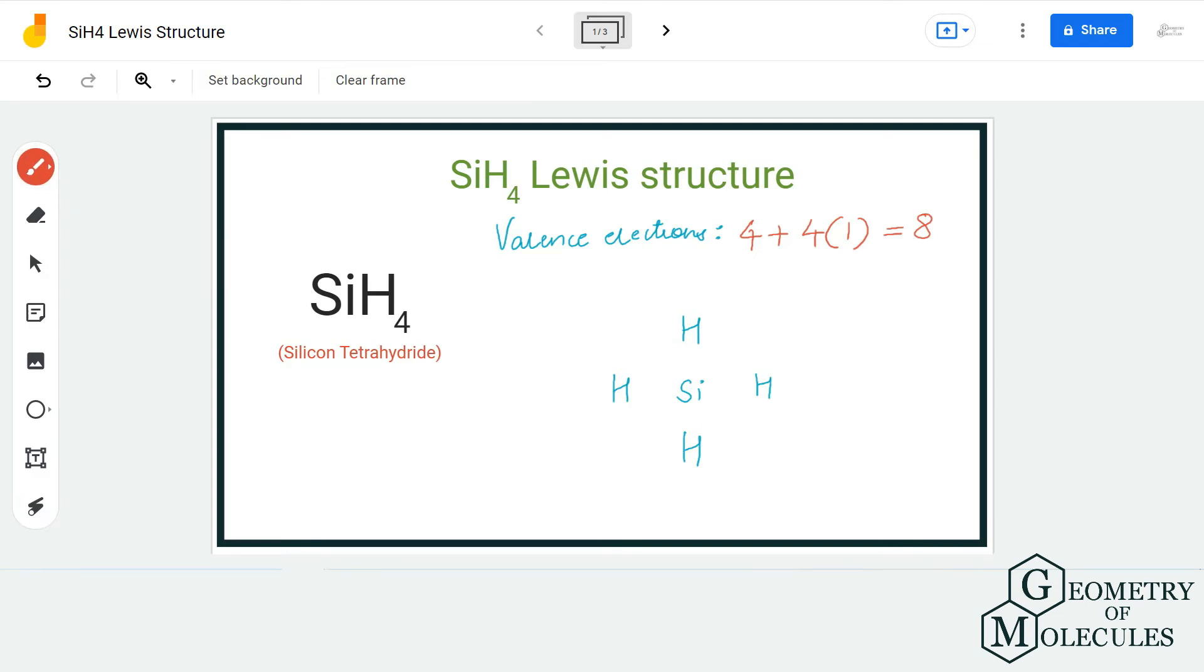Doing that, we will be using up all eight valence electrons, and this is the Lewis structure of SiH4. Hydrogen atoms have two valence electrons in their outer shell, which completes their outermost shell.